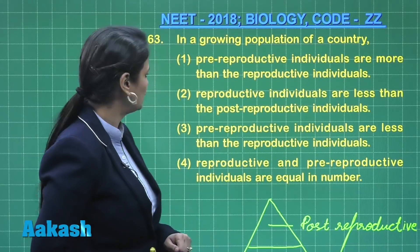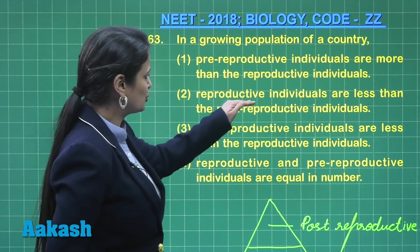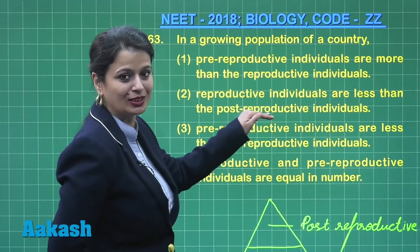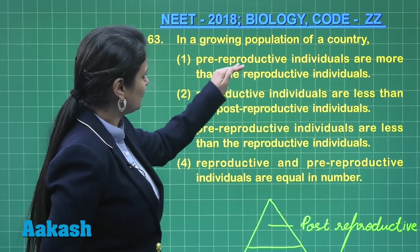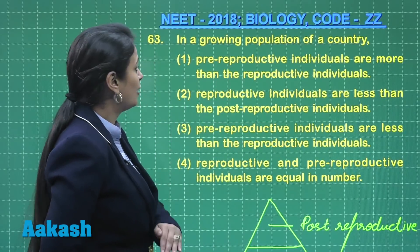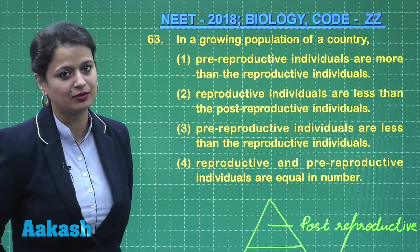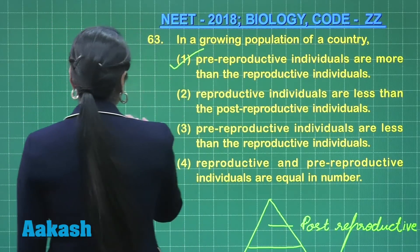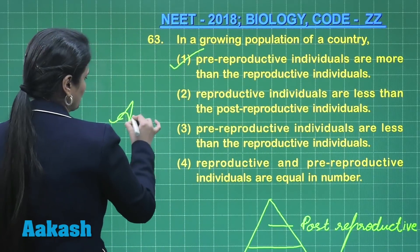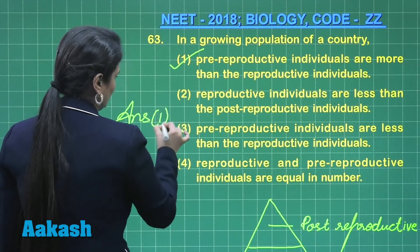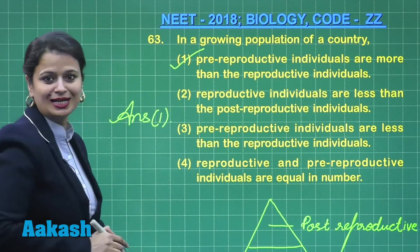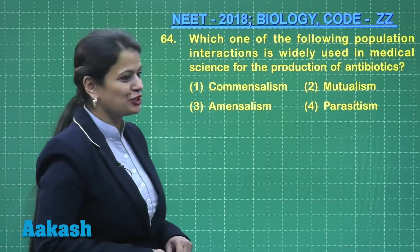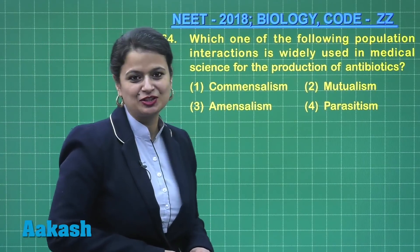Pre-reproductive individuals are less — no, maximum number is of pre-reproductive individuals. Reproductive individuals are less than post-reproductive — no, it is the reverse. Pre-reproductive individuals are maximum and more than reproductive individuals. So the right answer for this question is option number one.